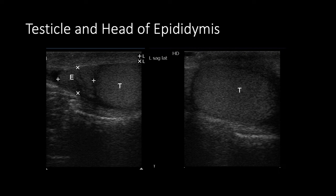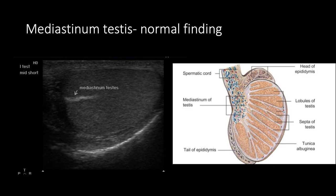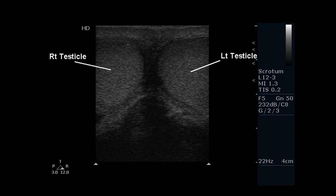The normal testicle appears very homogeneous on ultrasound. Scanning more superiorly you'll see the epididymal head, which also looks homogeneous and slightly separated from the testicle. The mediastinum testis is a bright white line seen in the middle of the testicle, particularly on short axis — this is completely normal. The 'buddy shot' — imaging both testicles simultaneously — lets you compare echogenicity and identify differences from torsion or mass.